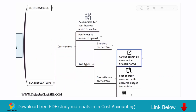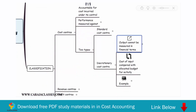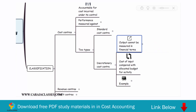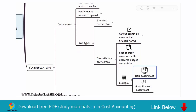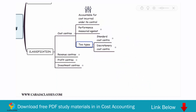Then we have discretionary cost centers. Discretionary cost centers are those cost centers where output cannot be measured in financial terms — that is, we cannot define an input-output ratio. The cost of input cannot be compared with a standard cost because a standard cost cannot be established, but it will be compared with the allocated budget for that activity. Examples of discretionary cost centers include the research and development department and the advertisement department, where output cannot be measured precisely.